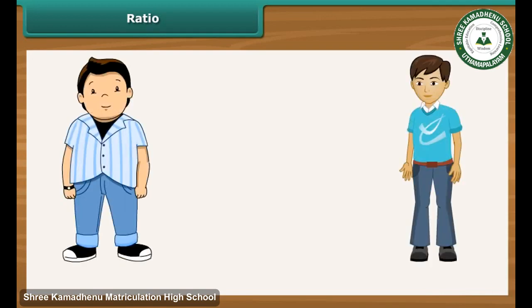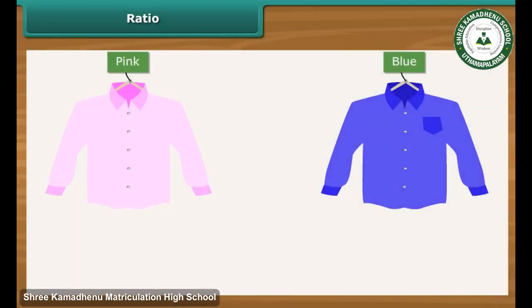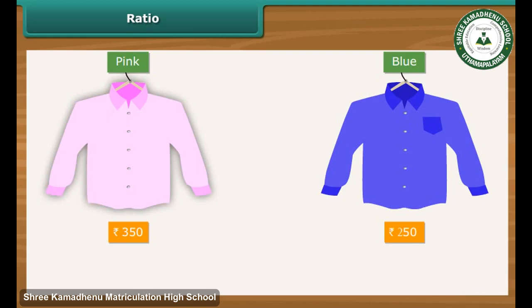We usually compare quantities and values by calculating their difference. For example, suppose the weights of two friends, Varun and Arun, are 38 kgs and 35 kgs respectively. We say that Varun is heavier than Arun by 38 minus 35, that is 3 kgs. Similarly, suppose Ritu buys two shirts, one pink and the other blue, costing Rs. 350 and Rs. 250 respectively. We say that the pink shirt is costlier than the blue one by Rs. 100.